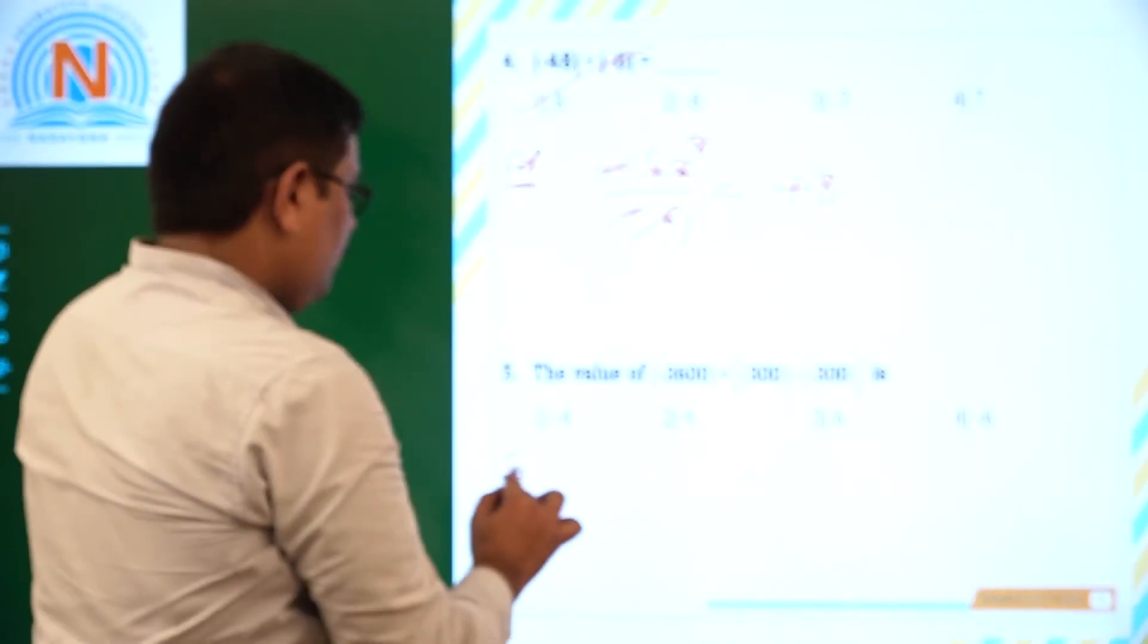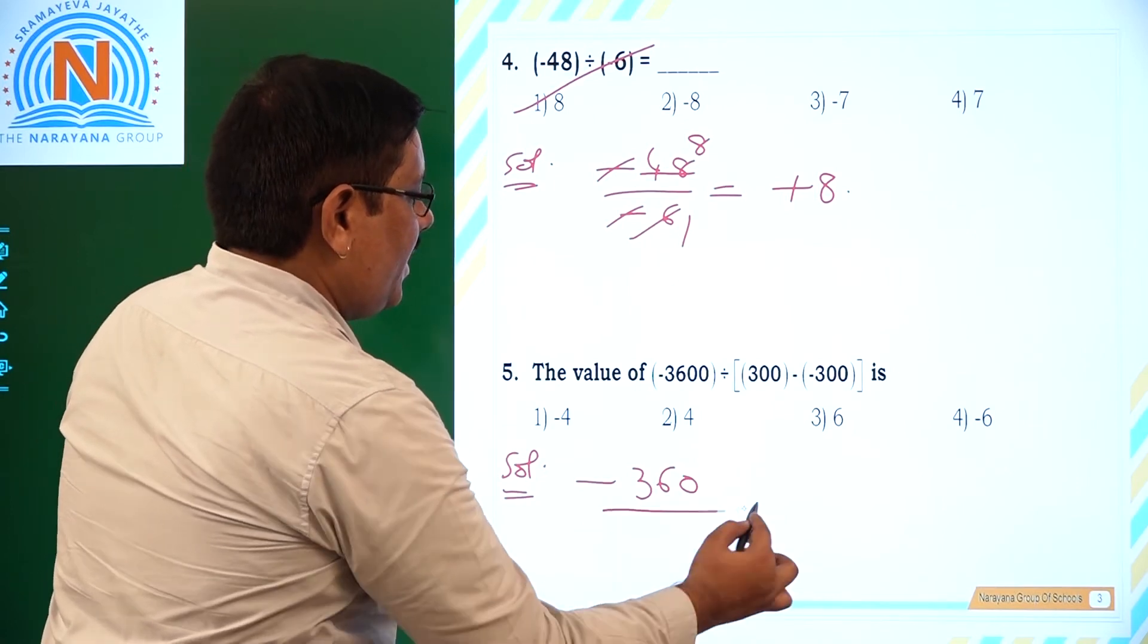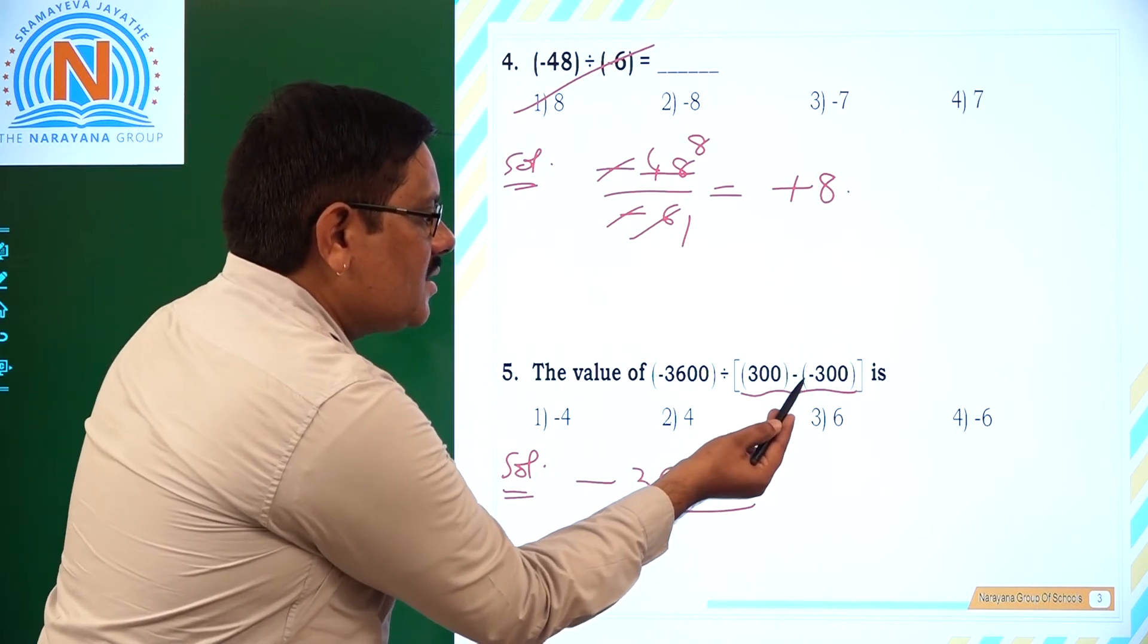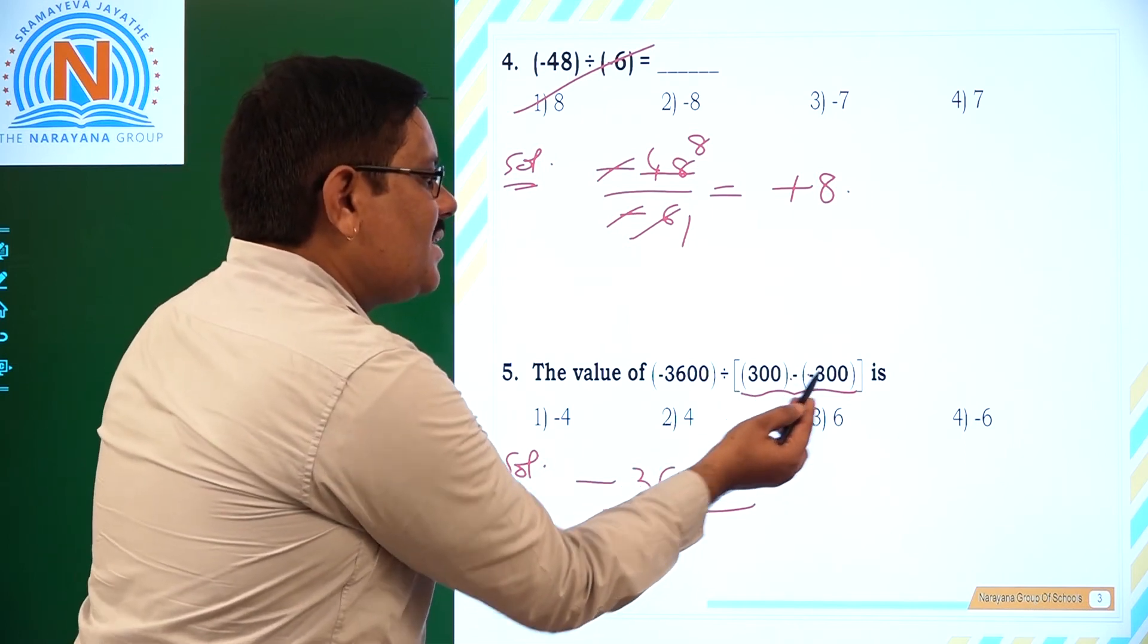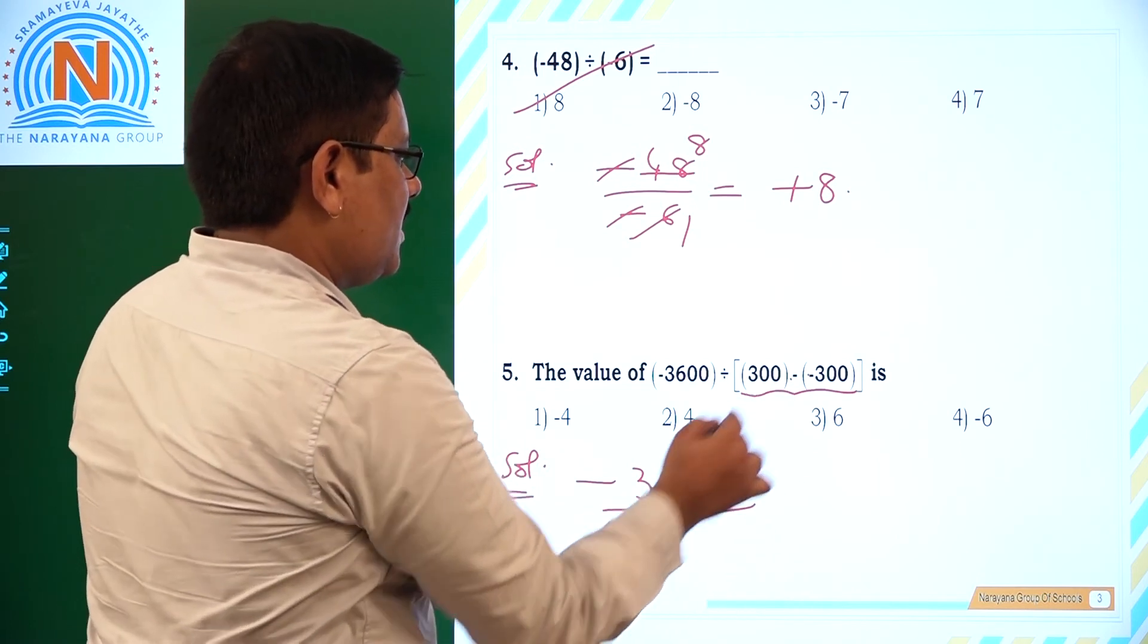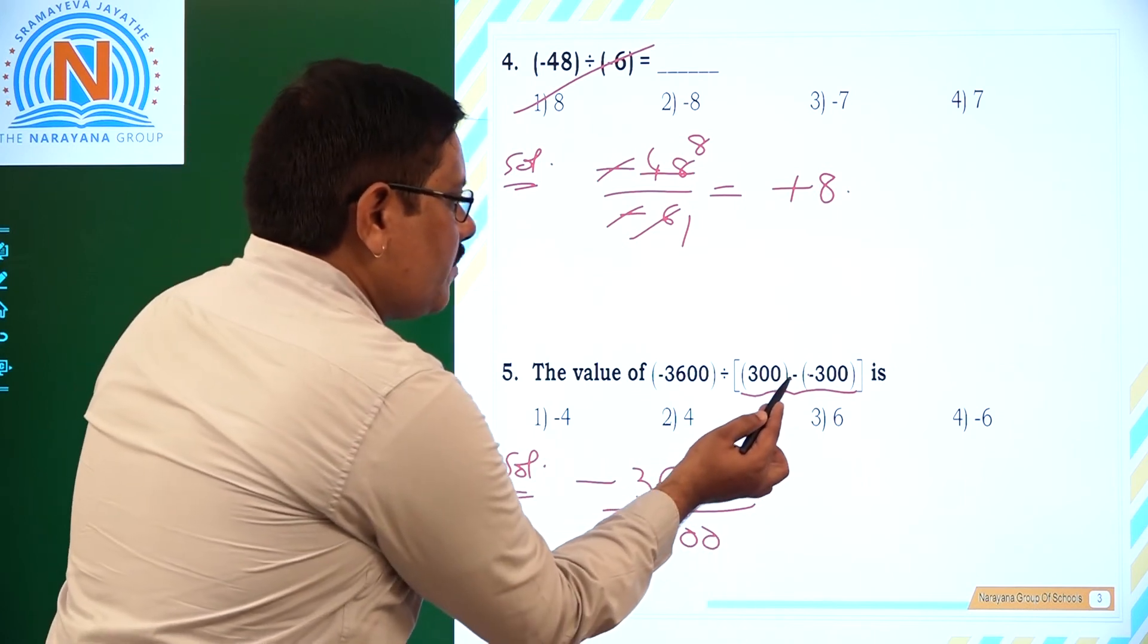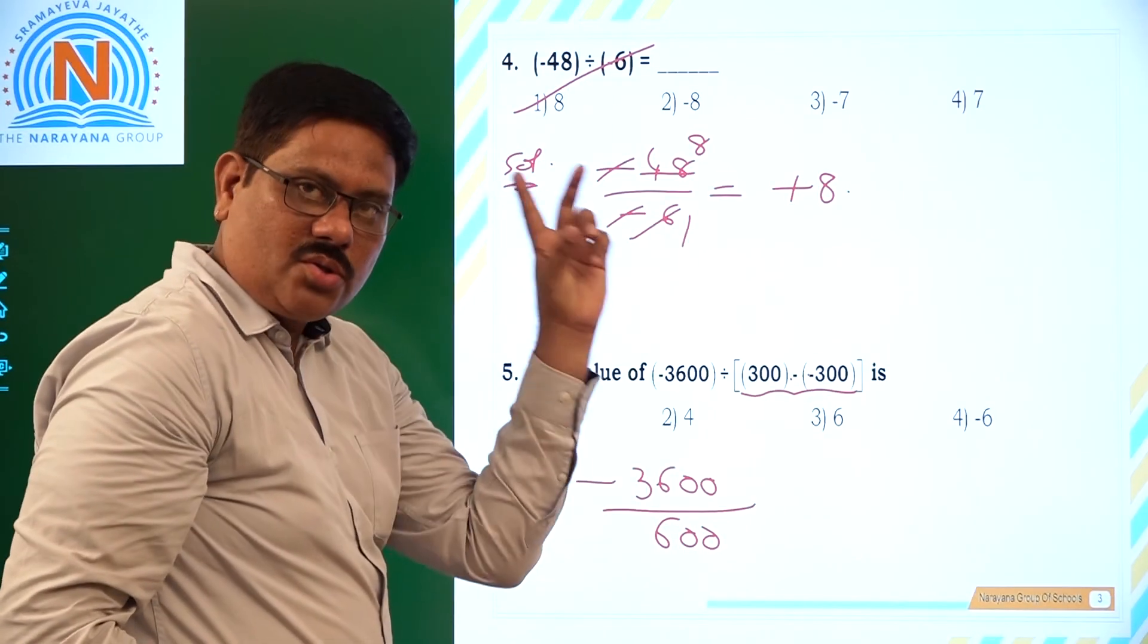Now see this question. We have minus 3600 divided by... See this resultant answer. What is the resultant answer here? 300 minus of minus 300. What is minus of minus for us? Plus. So 300 plus 300. What is 300 plus 300? That is going to be 600. Because minus into minus is plus, we add up these two. So 300 plus 300 is going to be 600.